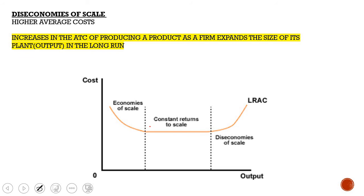Diseconomies of scale occur when average costs are higher — increases in average total cost as a firm expands plant size or output in the long run. They are caused by problems of coordination and communication that arise in large firms. On the long run average cost curve graph, you first have economies of scale, then constant returns to scale, then diseconomies of scale where average costs are increasing. You can memorize this graph as it is.